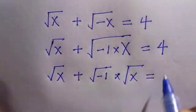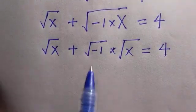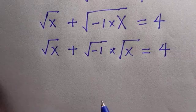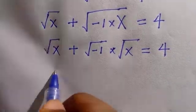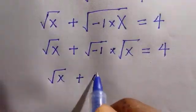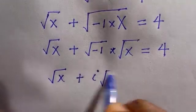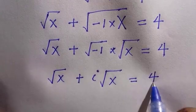In each, we can write this root of minus 1 as a complex root, which is i. So there we have root x plus i root x equals 4.